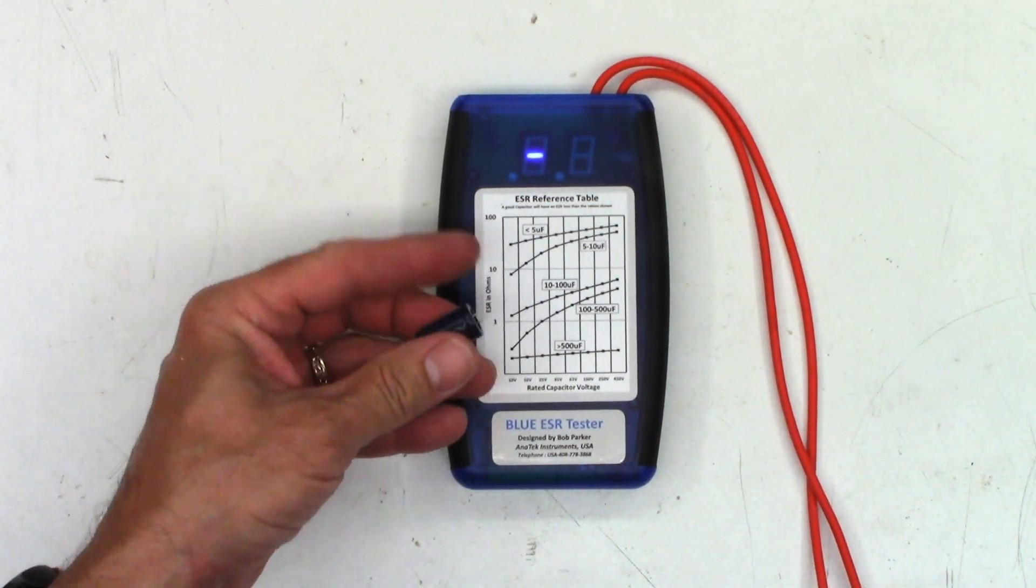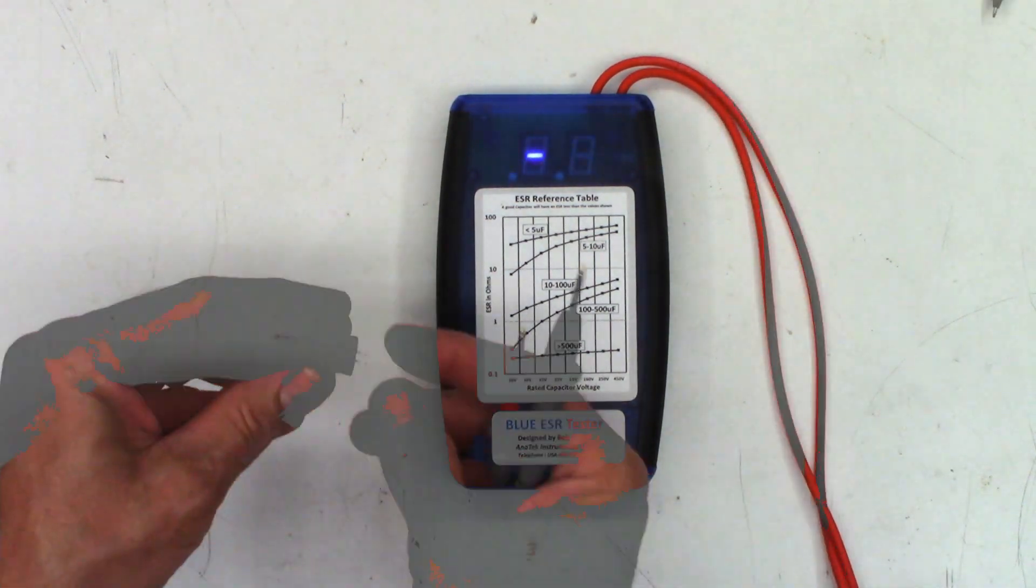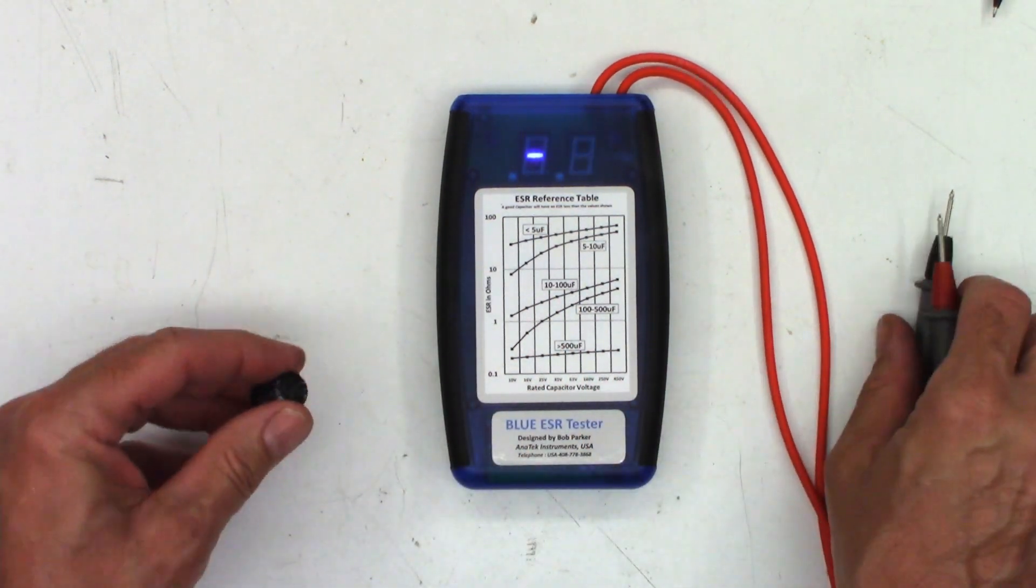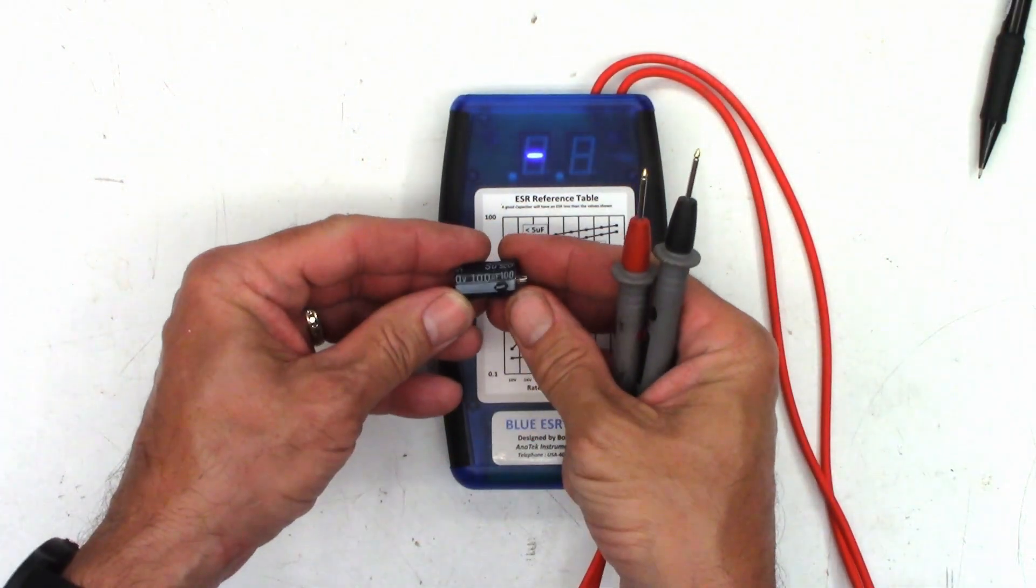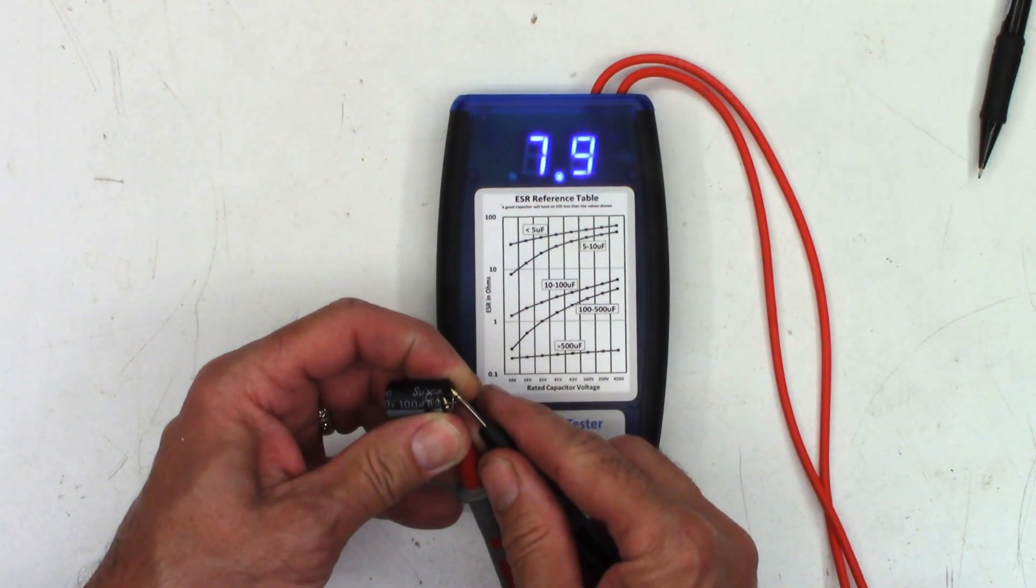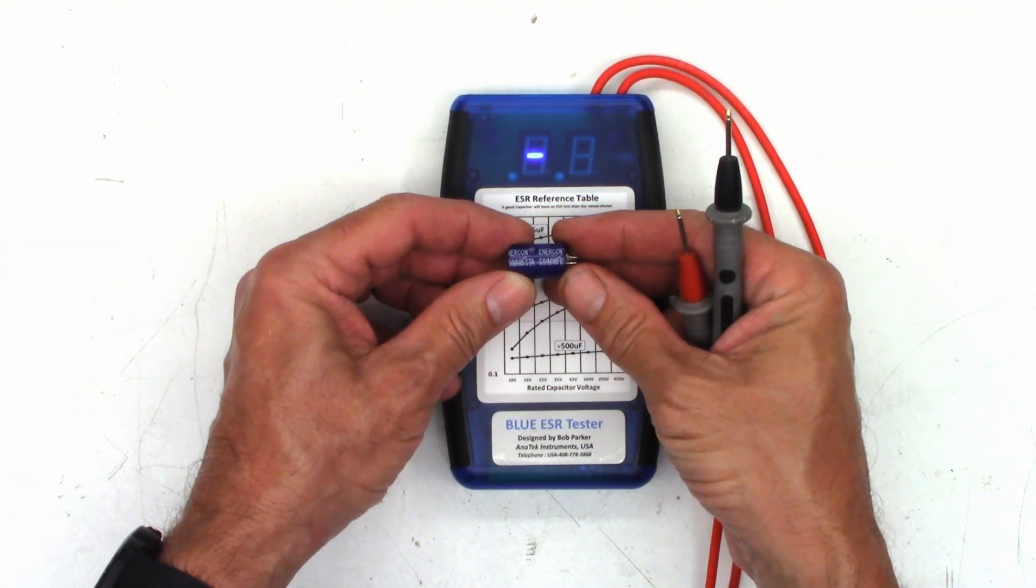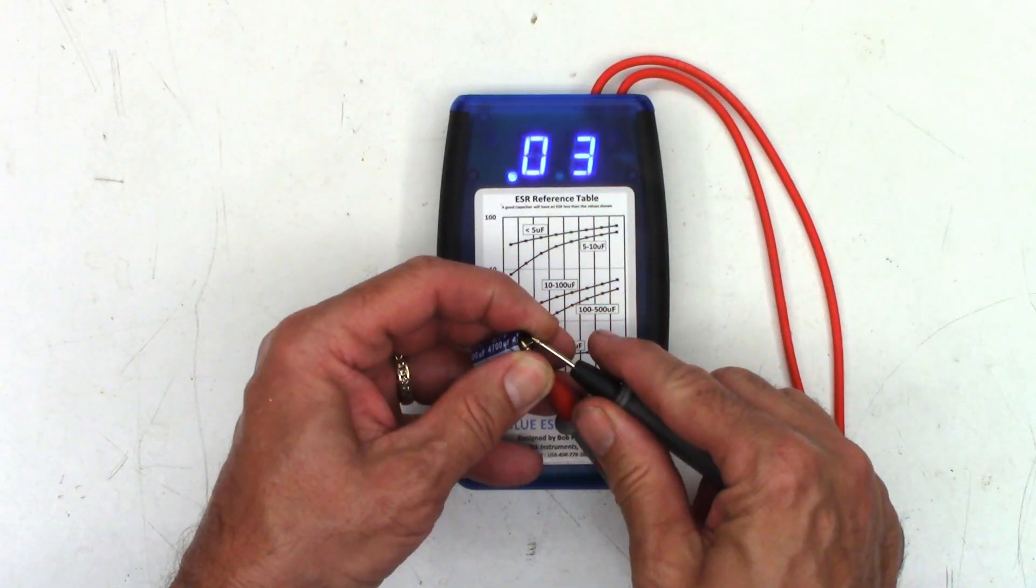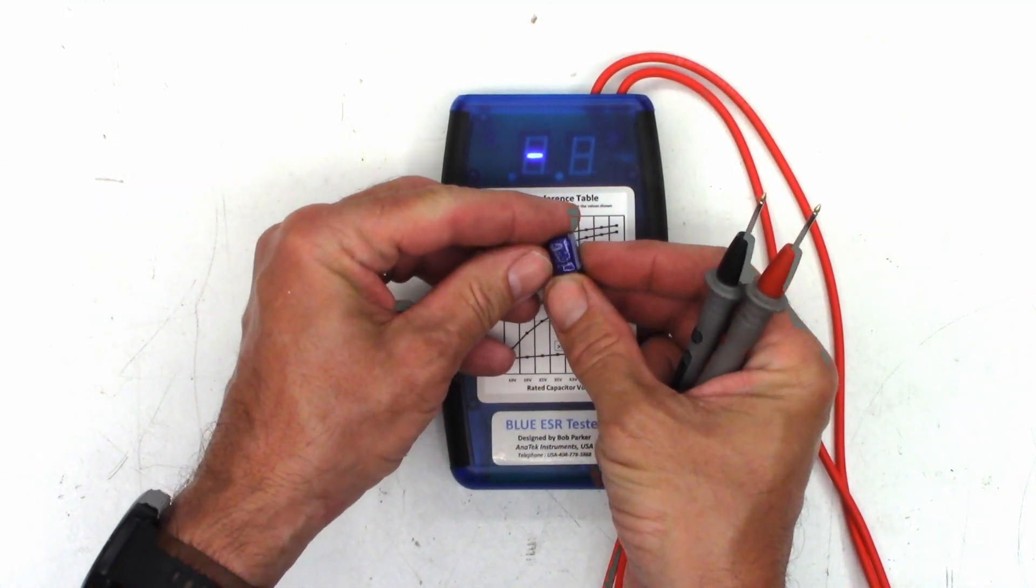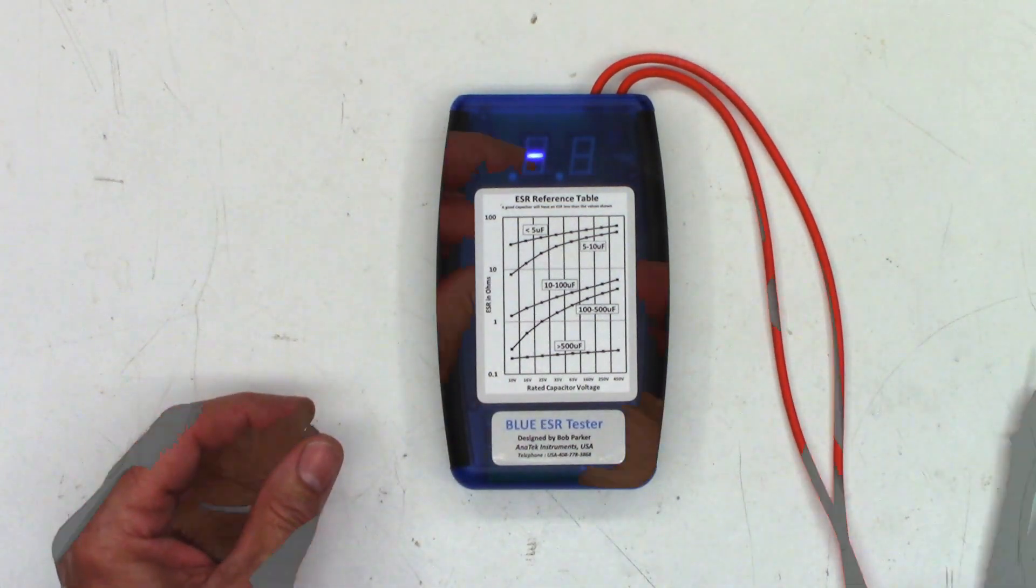Okay, now on to the Blue ESR meter. Cap number one, which is a Suscon 100 at 100 volts, and I see 0.14 ohms. Number two, the same value, 100 at 100, and I see 2.0 ohms on that one. On to number three, another Suscon 100 at 100 again, and I see 7.9 ohms on that one. On to the 4700 at 6.3, this is an Intercon capacitor. I see 0.03 ohms on that one.